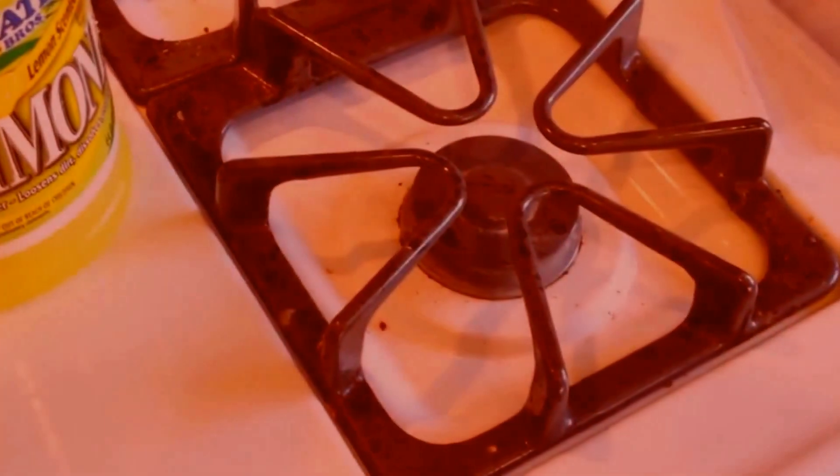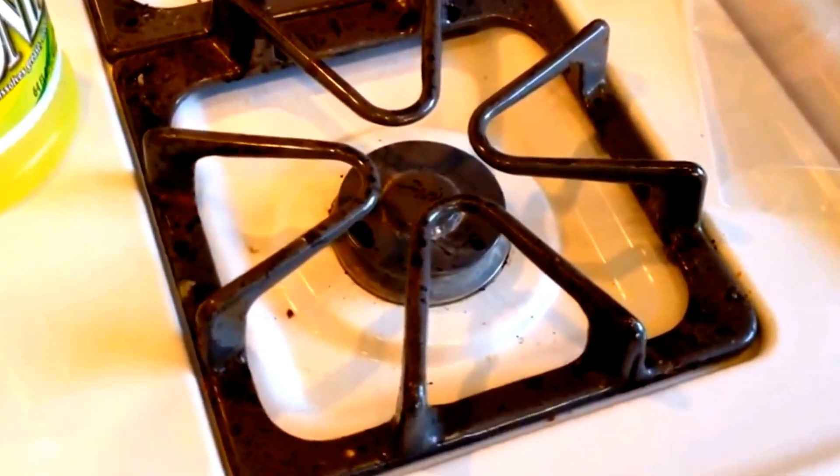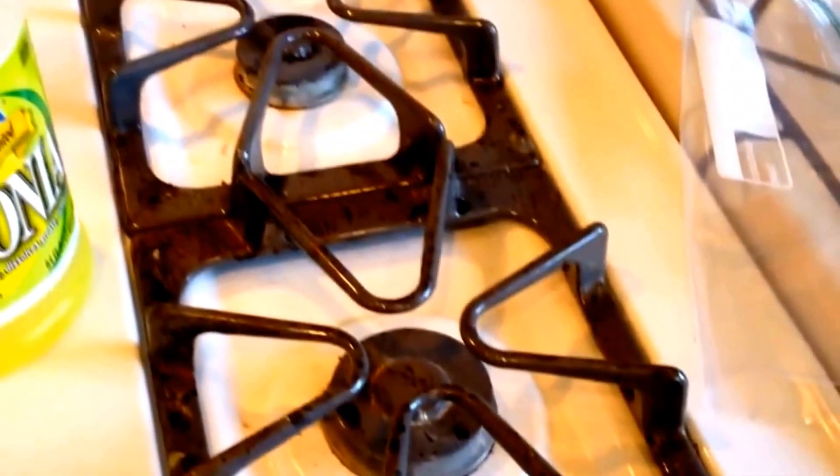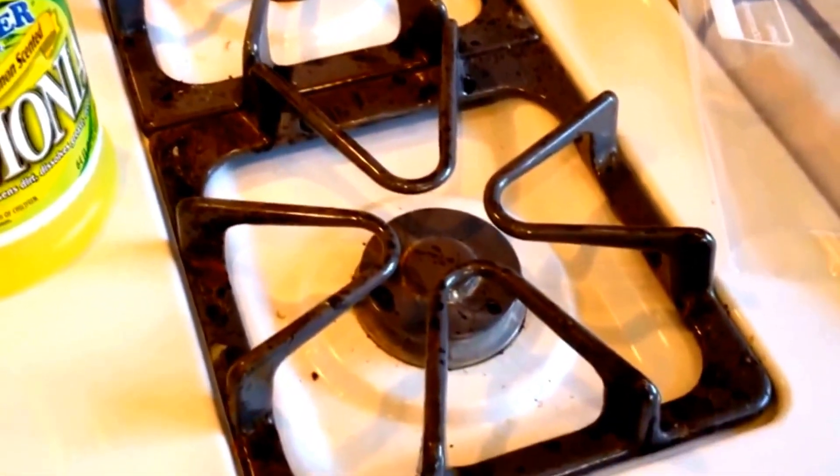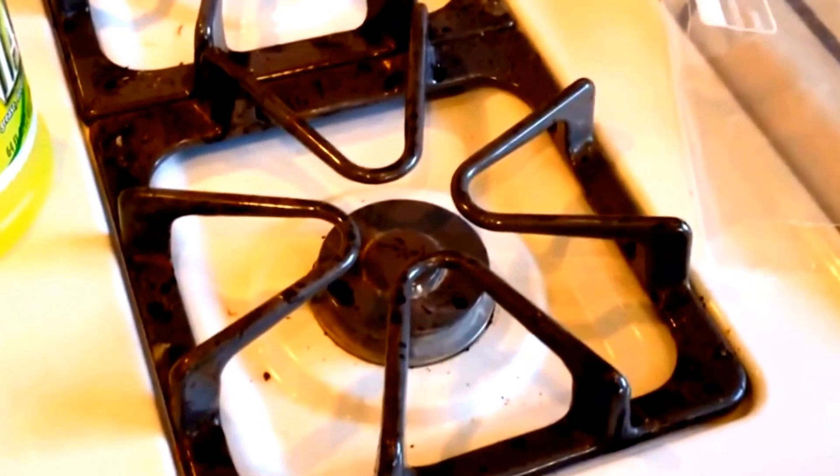We're removing baked on, caked on, burnt on grease and food off of the stovetop burner tops. We're going to be using ammonia and a large plastic bag that zips shut. Here's what's going to happen next. Burner top is inside the plastic bag.